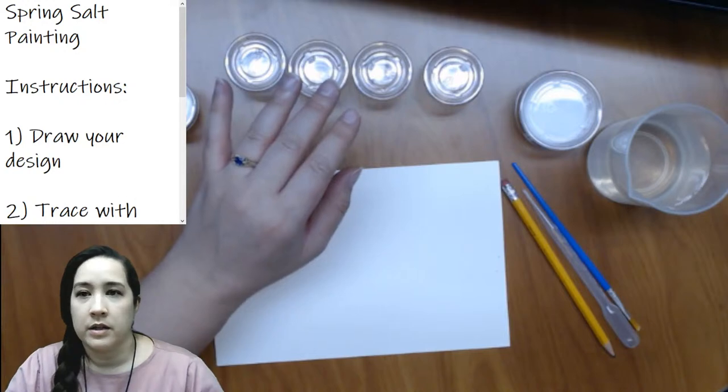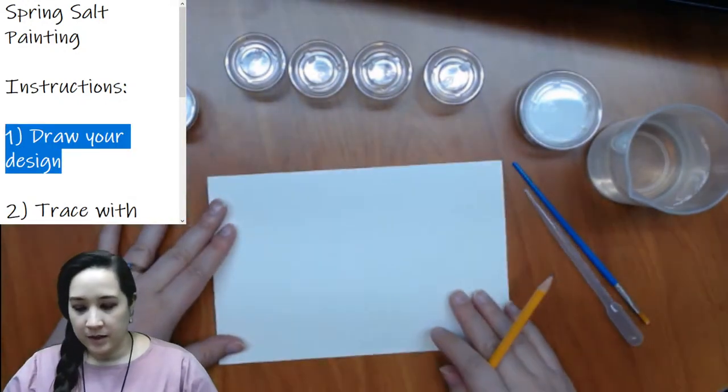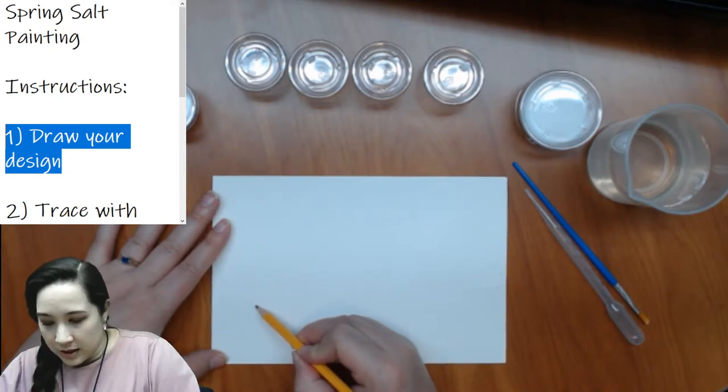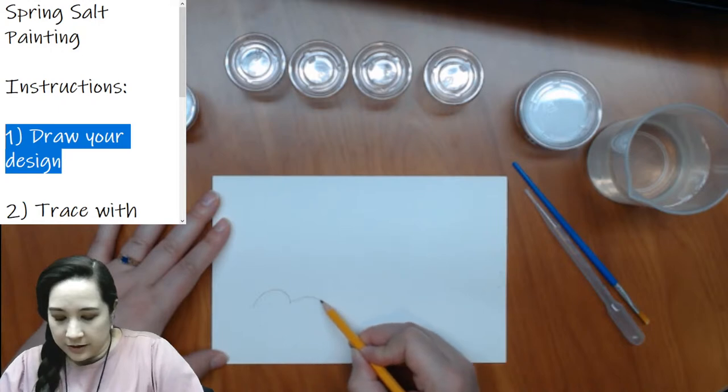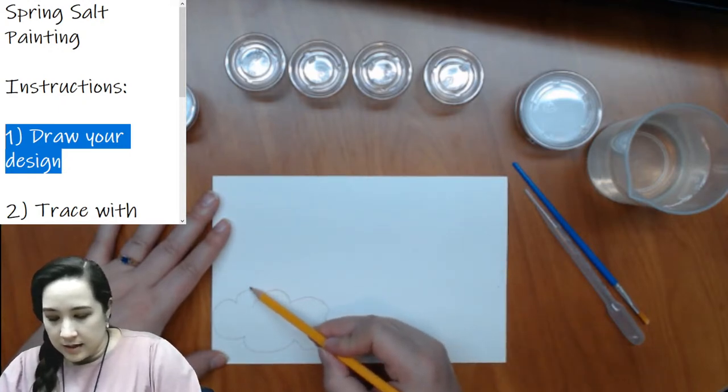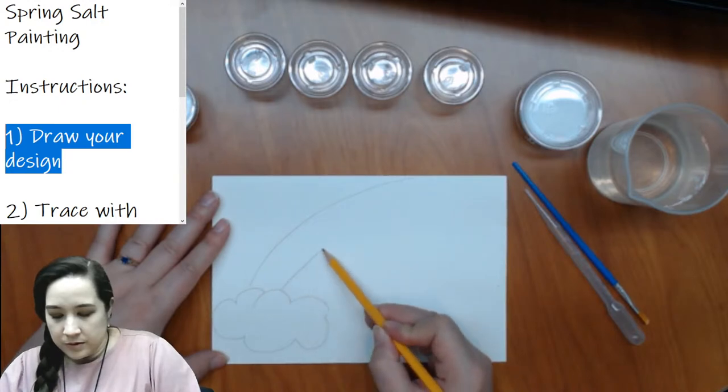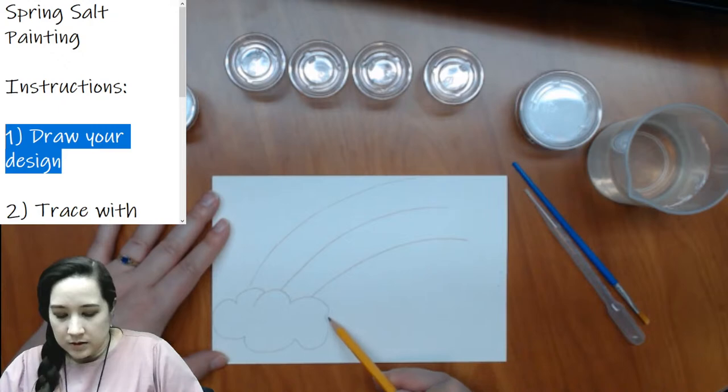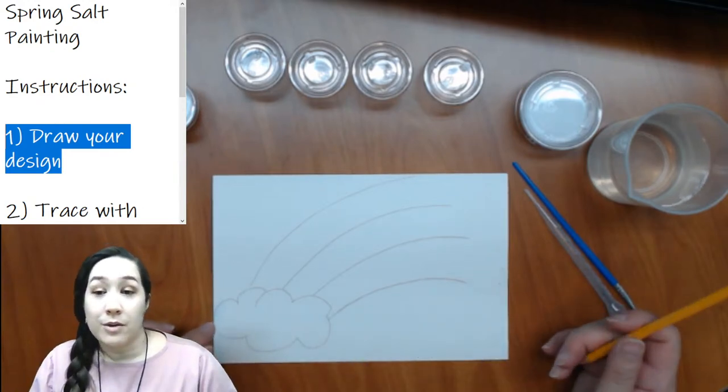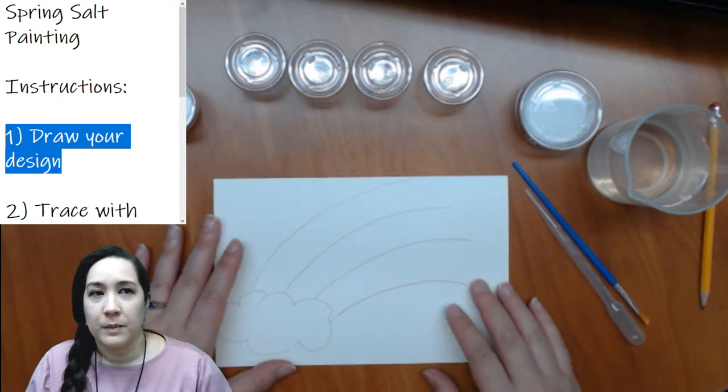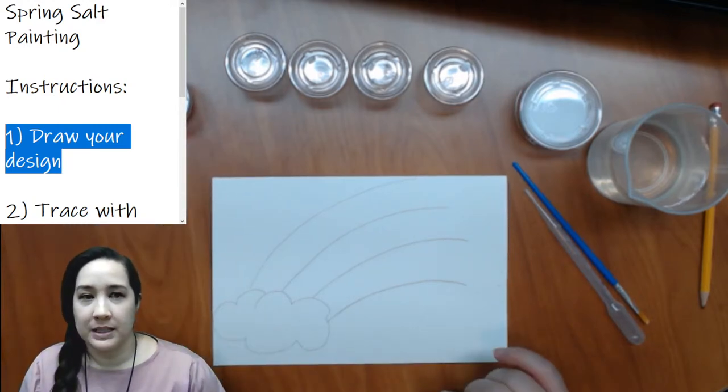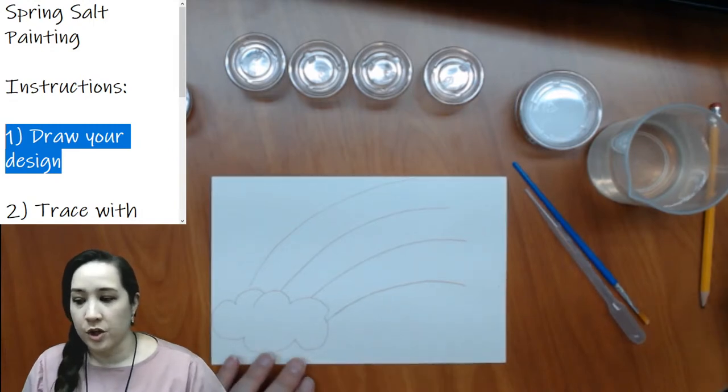Our first step is to draw our design. So I have a pencil here, and I'm just going to draw a really basic design. So I might draw a rainbow. A rainbow is generally in the sky, so I think I'll draw a little cloud here, just kind of a little cloud like that. And then I'll draw kind of the lines of the rainbow.